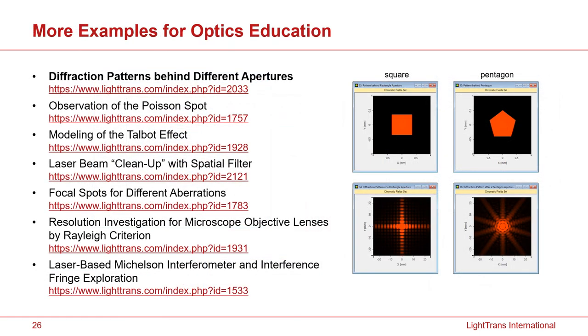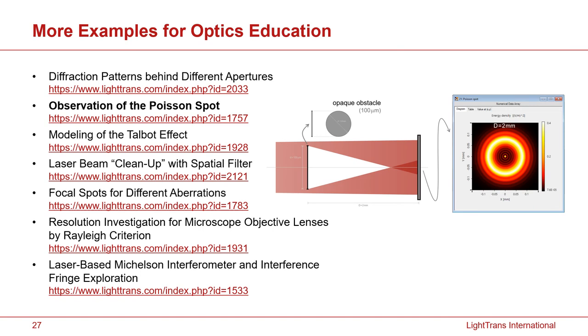In addition to the three examples I presented previously, I can mention that with the software VirtualLab Fusion, you can do much more. For example, here I just list some more examples that you can easily find from our website, lighttrans.com. For example, we can show the diffraction pattern behind different apertures with different shapes. Or you can demonstrate the classical effect which is known as Poisson's spot.